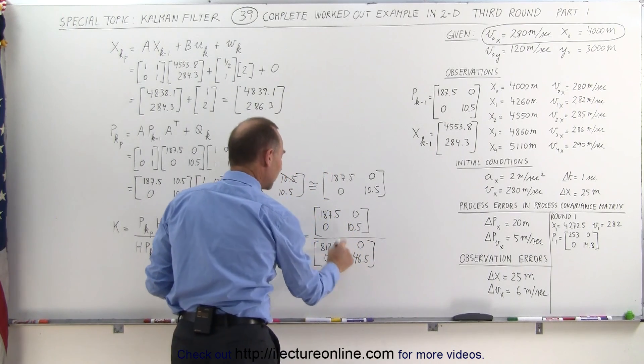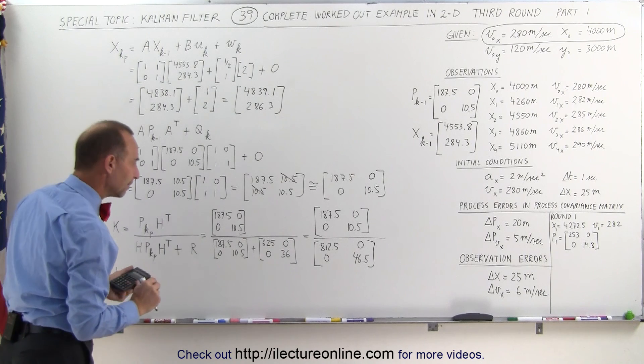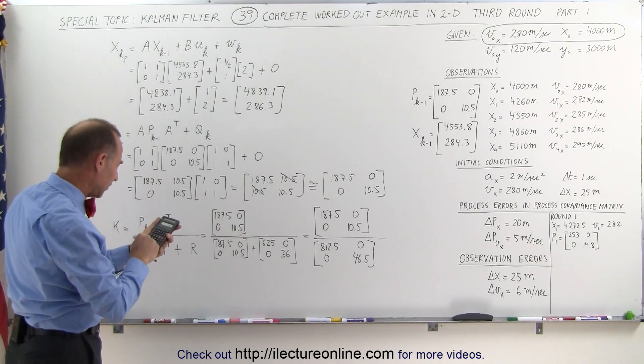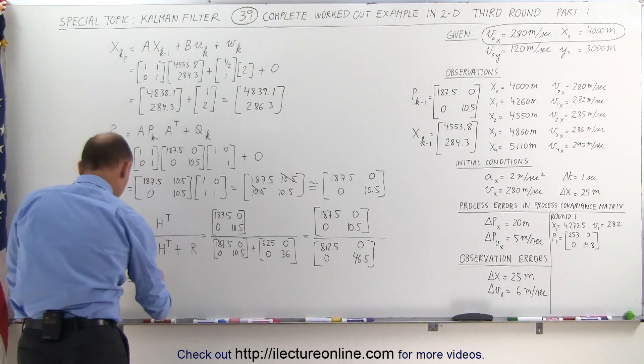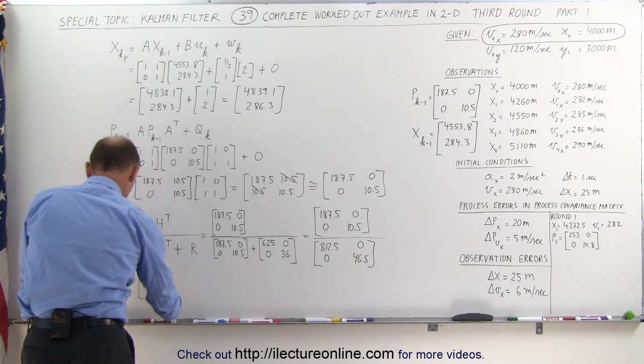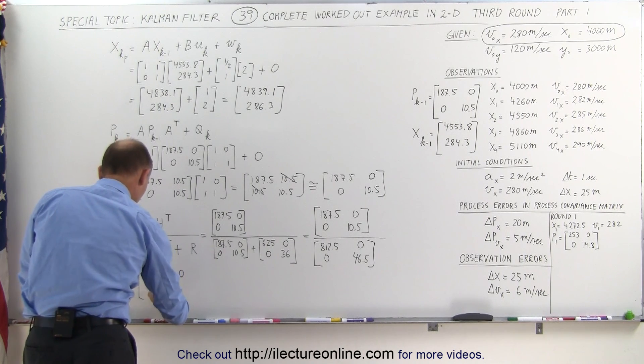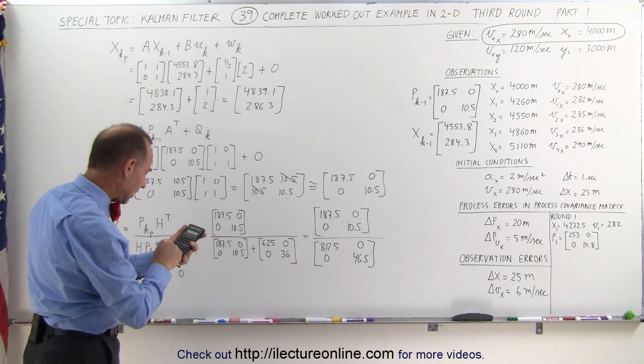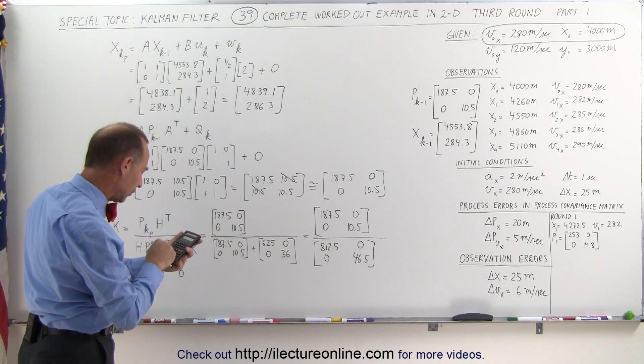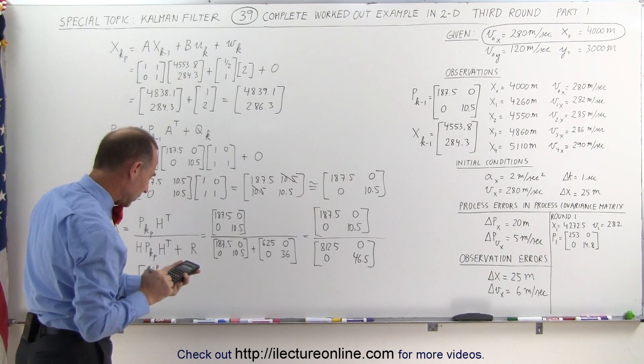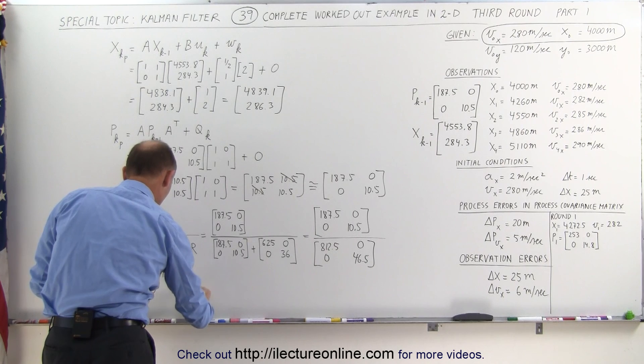Now we divide the denominator into the numerator, and we get the following Kalman gain. 187.5 divided by 812.5, Kalman gain now gives us 0.231, and there we get 10.5 divided by 46.5, we get 0.226.